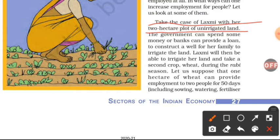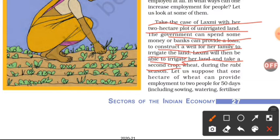The government can spend some money, or banks can provide a loan to construct a well for her family to irrigate the land. Lakshmi can get a loan from the bank to build a well near her field, making irrigation possible. After getting this loan and building the well, Lakshmi will be able to irrigate her land.